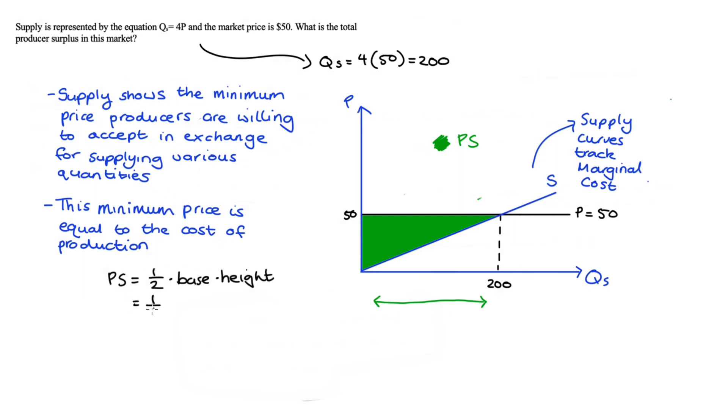So our producer surplus is just equal to the area of the triangle then. So we have half times base times height, which is half times our base would be 200, and our height is 50, and this comes to 5000.